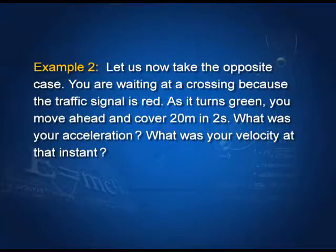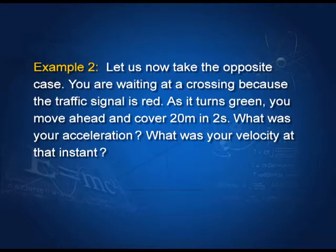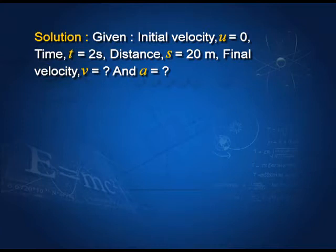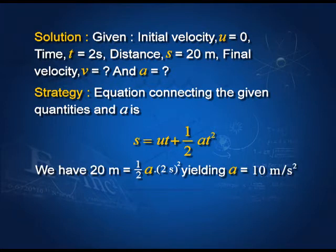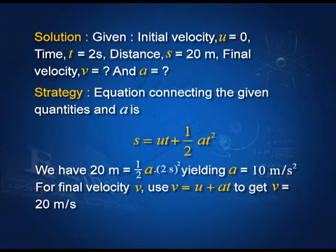Example 2: You are waiting at a crossing. As the signal turns green, you move ahead and cover 20 meters in 2 seconds. What was your acceleration and your velocity at that instant? We are given initial velocity u = 0, time t = 2 s, and distance s = 20 m. Using s = ut + ½at², we find a = 10 m/s². Once we have a, we use v = u + at and get v = 20 m/s.